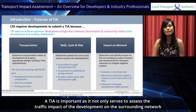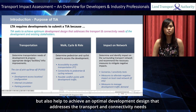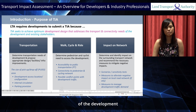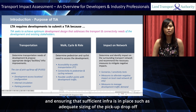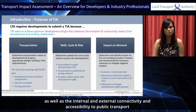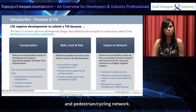A TIA is important as it not only serves to assess the traffic impact of the development on the surrounding network, but also helps to achieve an optimal development design that addresses the transport and connectivity needs of the development. This is done through the assessment of the different needs of the development and ensuring that sufficient infrastructure is in place, such as adequate sizing of the pickup drop-off, as well as the internal and external connectivity and accessibility to public transport and pedestrian cycling network.